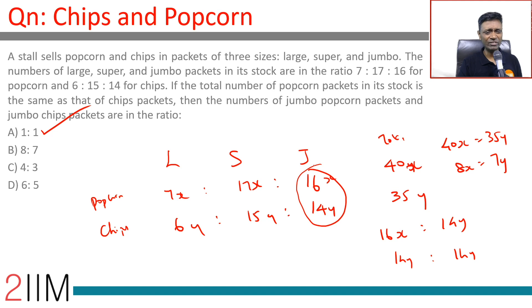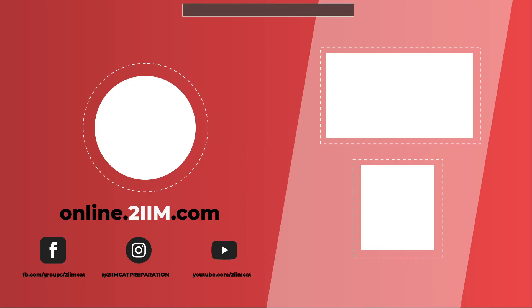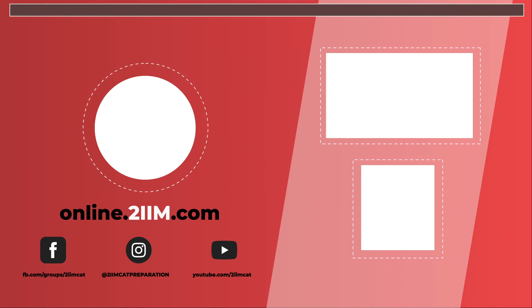Done. And again, a very simple question. Once you get the ratios, put an X and Y, compare the totals, get something linking X and Y and we are through.